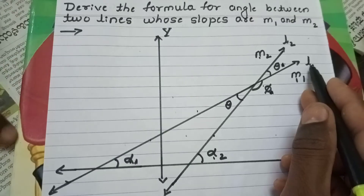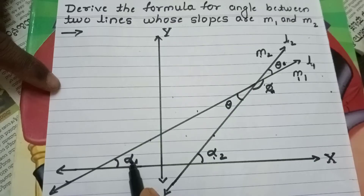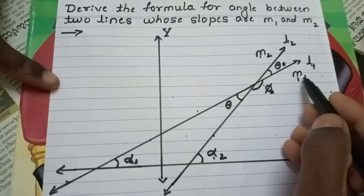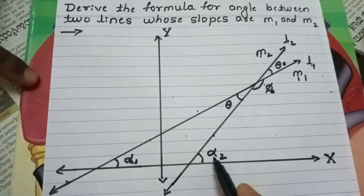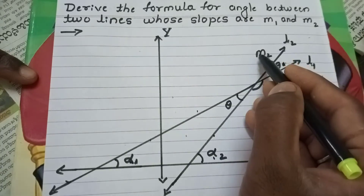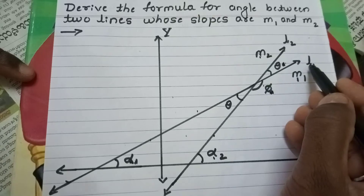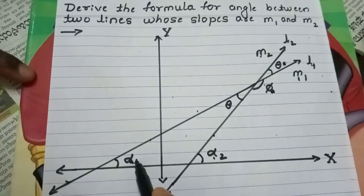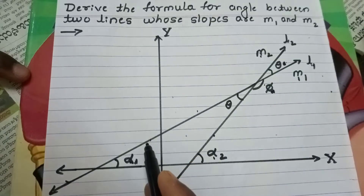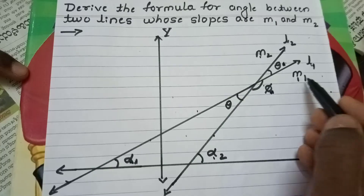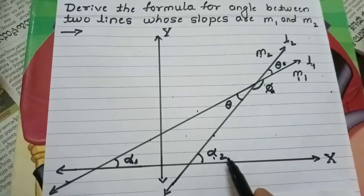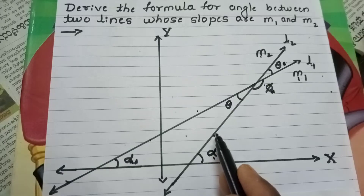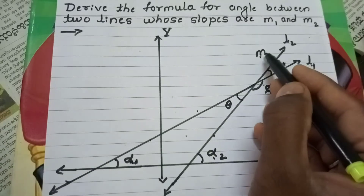L1 makes an angle alpha1 with the positive direction of the x-axis, having slope M1. L2 makes an angle alpha2 with the positive direction of the x-axis, having slope M2.